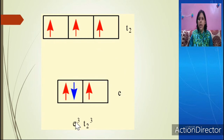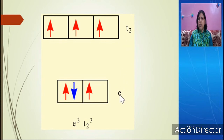When writing the configuration, we write E and T2, not Eg and T2g. We are not using the 'g' subscript because in tetrahedral complexes there is no center of symmetry, and due to the lack of center of symmetry in tetrahedral complexes, we cannot write 'g' as a subscript for these orbitals.